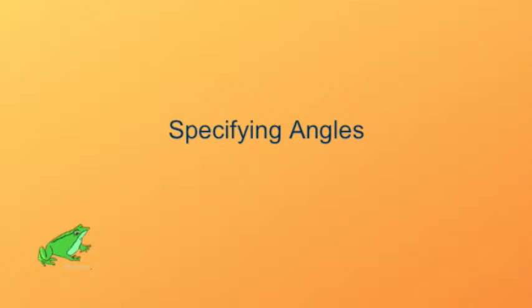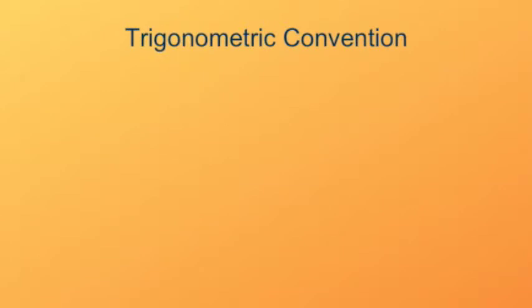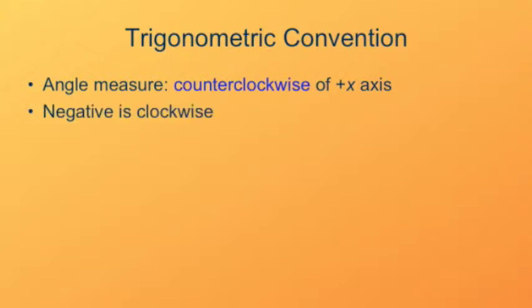So we need a good way to specify what angles are. The trigonometric convention is that an angle is measured counterclockwise of the positive x-axis. By the same token, an angle clockwise of the positive x-axis is negative.